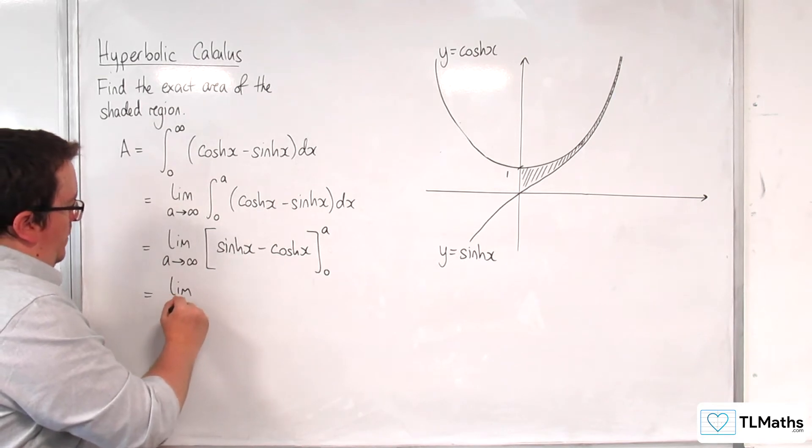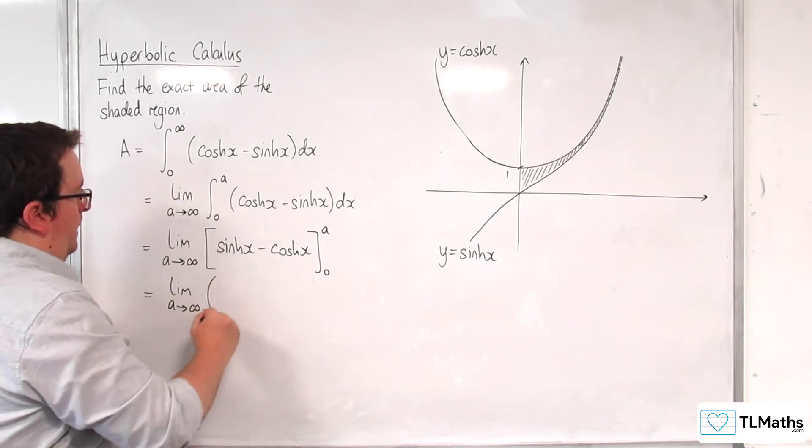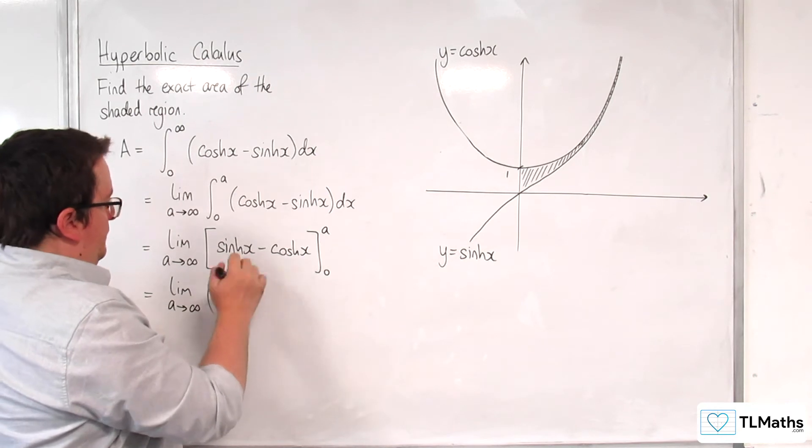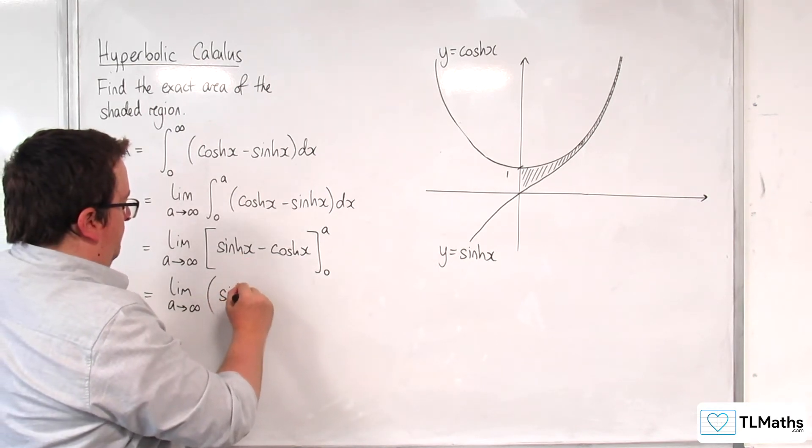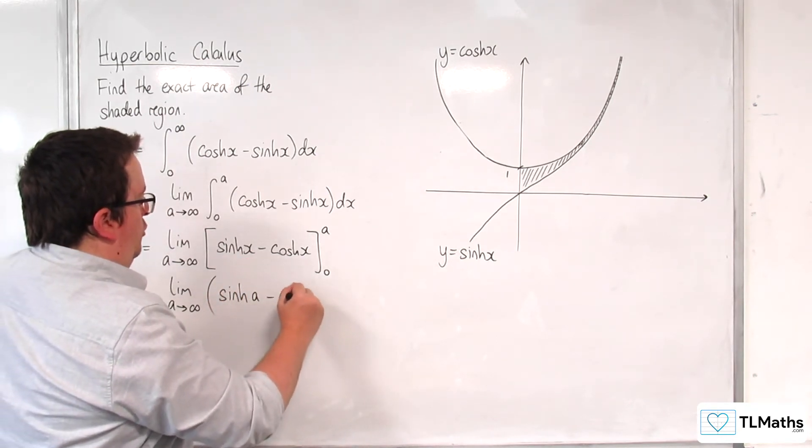Now I am going to substitute in my limits. So we get sinh of a take away cosh of a.